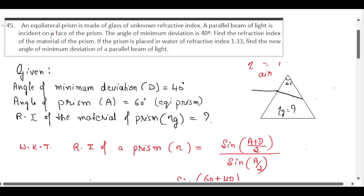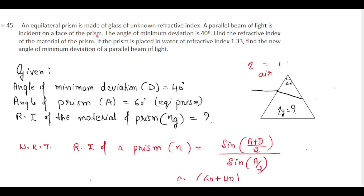This question is taken from the Physics Model Paper 1 of 2024-25, question number 45. An equilateral prism is made of glass of unknown refractive index. A parallel beam of light is incident on the face of the prism. The angle of minimum deviation is 40 degrees. Find the refractive index of the material of the prism. If the prism is placed in water of refractive index 1.33, find the new angle of minimum deviation of a parallel beam of light.